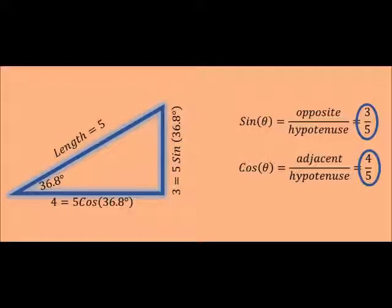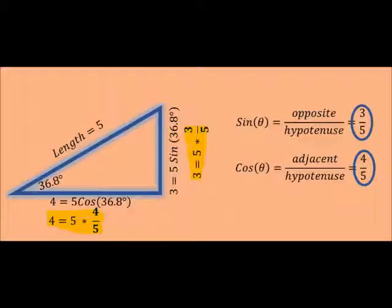This is a ratio, the ratio of 3 over 5 and the ratio of 4 over 5. So I can get the horizontal and vertical components of this triangle by either multiplying by sine and cosine or by multiplying through by those ratios, the 3 5ths and 4 5ths.